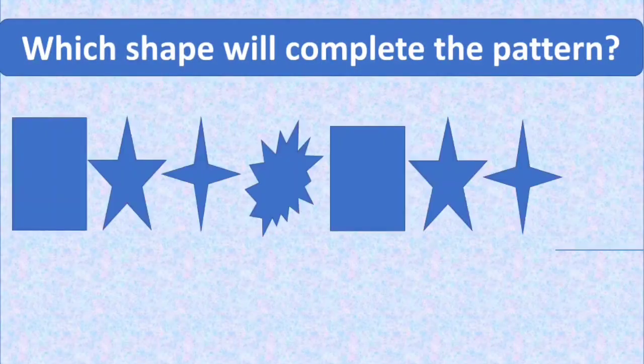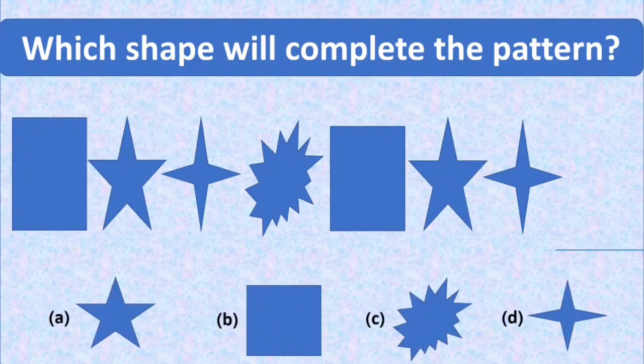Our next question is, which shape will complete the pattern? Some figures and a blank at the end is given. We have to find the correct figure and complete the pattern. We have four options. We can see clearly it is a group of four that is repeated.